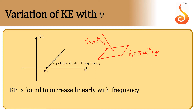No, because as long as the frequency of light is lesser than the threshold frequency of the metal, no matter what intensity we give, we cannot observe the photoelectric effect on the metal surface, because the energy of the light given is lesser than the work function of the metal. So this energy is not sufficient enough to knock out the electrons from the metal surface.